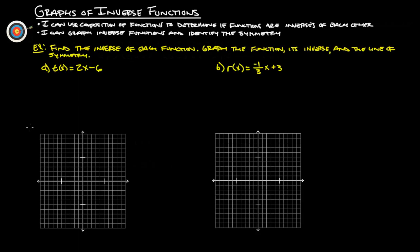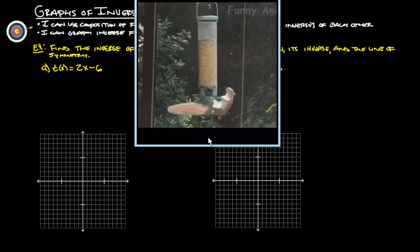All right, one last set of things to do here. Find the inverse of each function, graph it and the line of symmetry. Sounds rough, but it's really not too bad. But before we do that, let's do a quick little comedy break. This is one of my favorites.